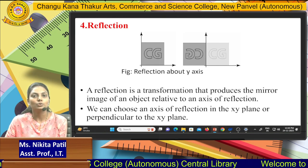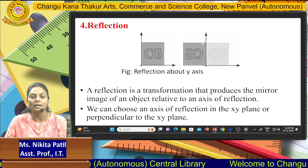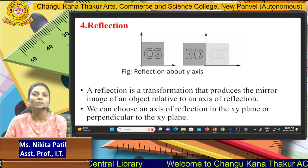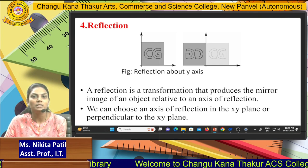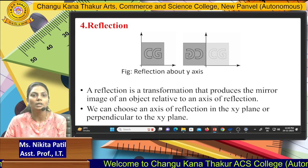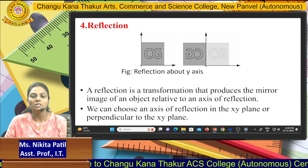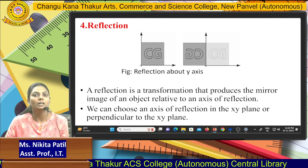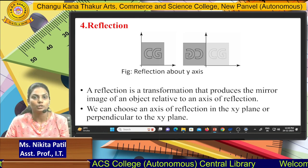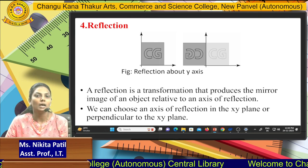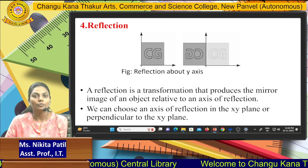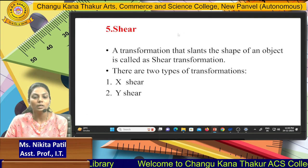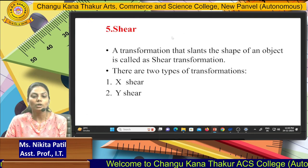Next is reflection. As seen in the diagram, reflection means your image can be reflected — similar to seeing your image in a mirror. Reflection is a transformation that produces the mirror image of an object relative to an axis of reflection. We can choose an axis of reflection in the xy plane or perpendicular to the xy plane.